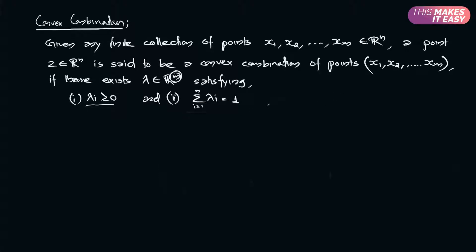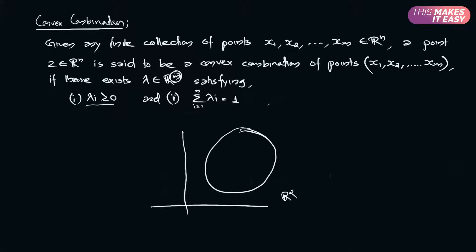So far we have discussed what convex combination is. Now, if we take any set in any space, and if I take any two points inside that set, take the convex combination of these two points, and those points are again lying inside the set, then that set is called a convex set.